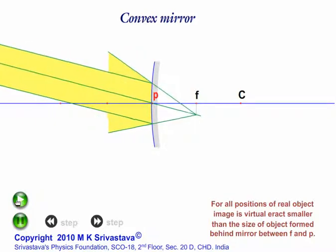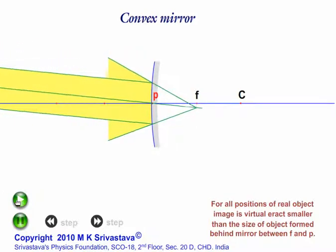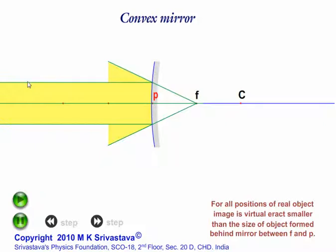When the object is at infinity, light rays are parallel to the principal axis and a point image is formed at the focal point of the mirror.